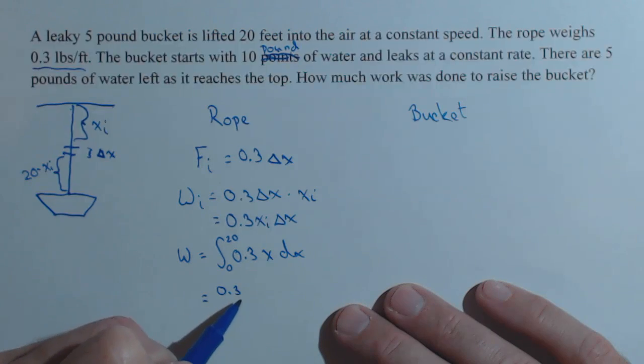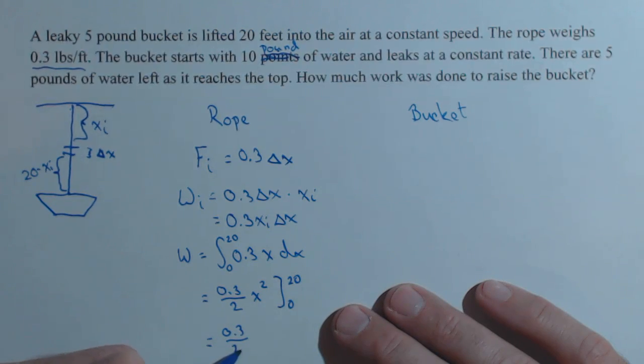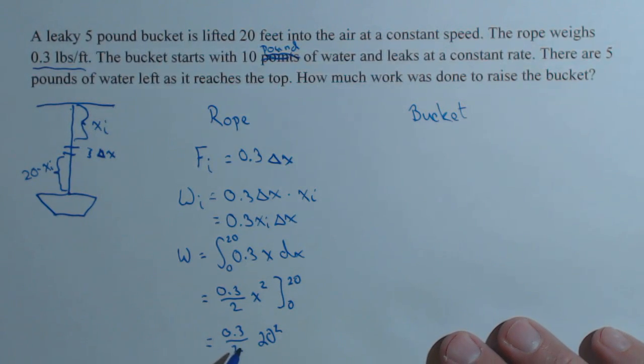So calculating this, we get 0.3 over 2 x squared from 0 to 20, which equals 0.3 over 2 times 20 squared. 20 squared is 400 divided by 2 times 0.3 is 60, and we are going to be in foot-pounds. So that's the amount of work to just raise the rope if there was no bucket attached.